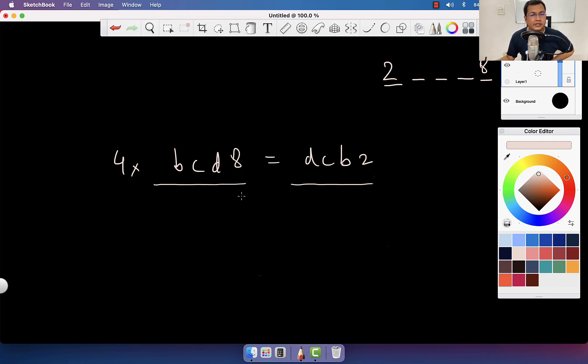This is 4 times bcd0 plus 4 times 8, which is 32, equals dcb0 plus 2. Let's get rid of zeros by dividing everything by 10. This will be 4 times bcd plus 3 equals dcb. So 4 times a three-digit number plus 3 will give me its reverse.